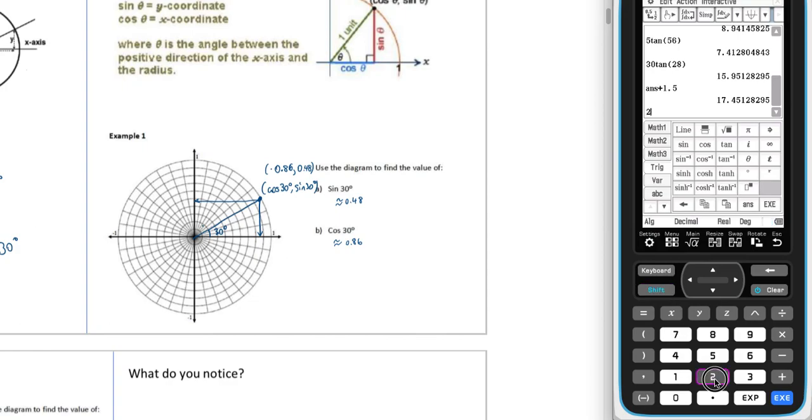And let's use our calculator to confirm. So shift 2, 30, this is the cosine. We've got, close. So we've got a value of, an actual value of 0.87. That's two decimal places.